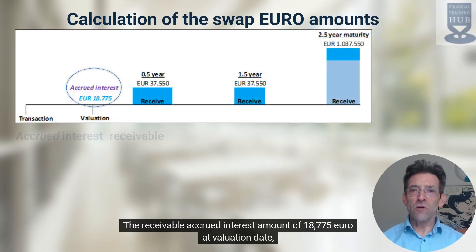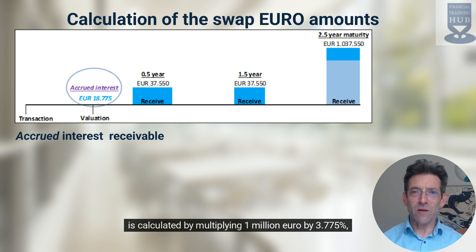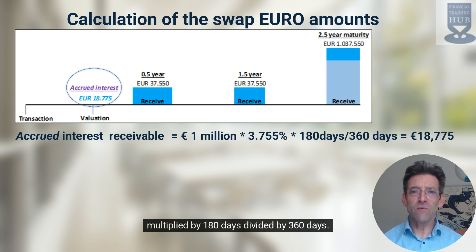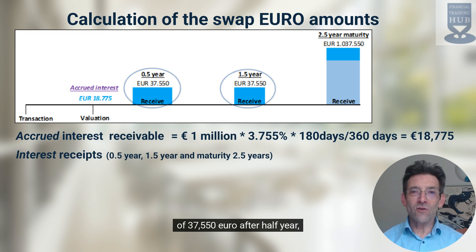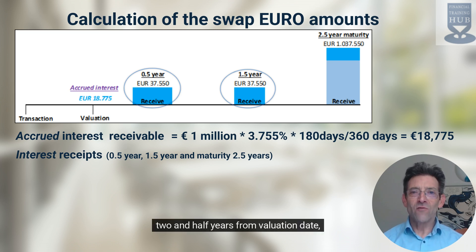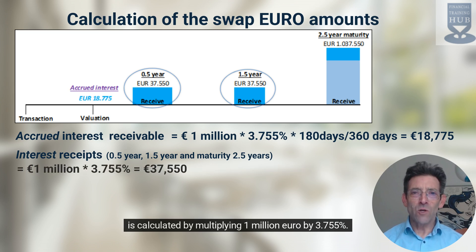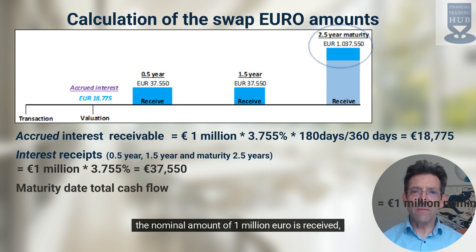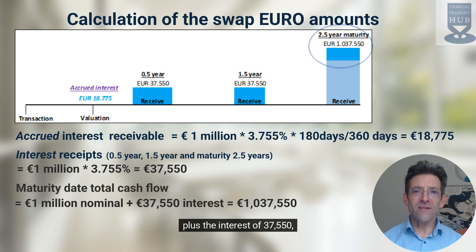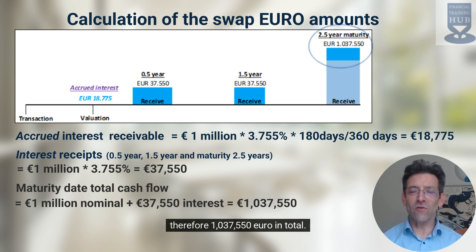The receivable accrued interest amount of €18,775 at valuation date is calculated by multiplying one million euro by 3.755% multiplied by 180 days divided by 360 days. The future swap interest receipts of €37,550 after half a year, one and a half years, and at maturity two and a half years from valuation date, is calculated by multiplying one million euro by 3.755%. At swap maturity date, the nominal amount of €1 million is received plus the interest of €37,550, therefore €1,037,550 in total.